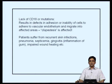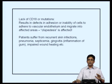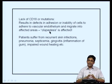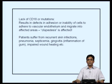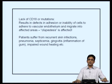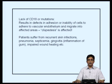As a result, there are defects in adhesion, and consequently diapedesis — the ability to migrate — is affected. Patients suffer from recurrent skin infections, pneumonia, septicemia, gingivitis (inflammation of the gum), impaired wound healing, etcetera. This shows clearly the importance of particular subunits in the innate immune response.